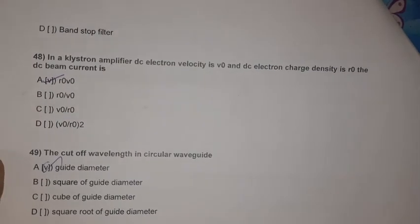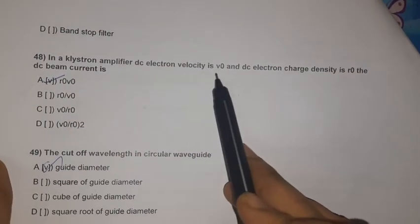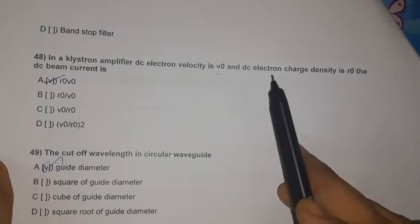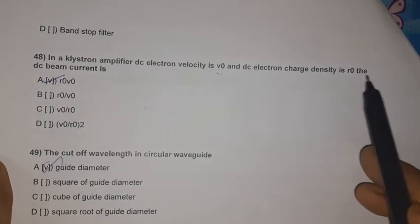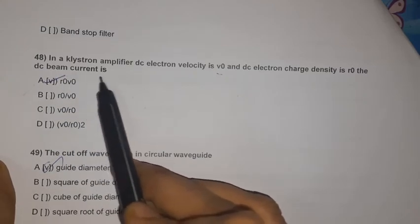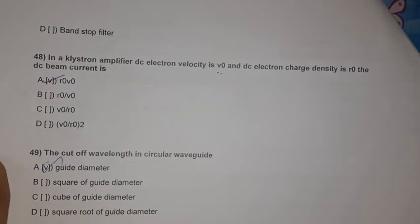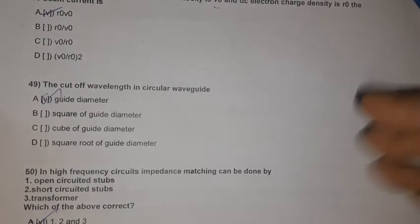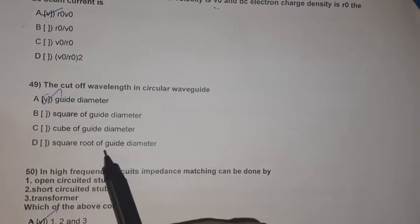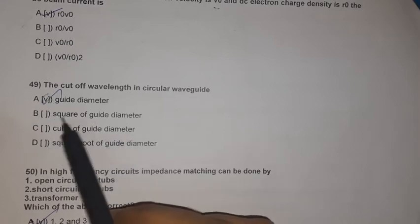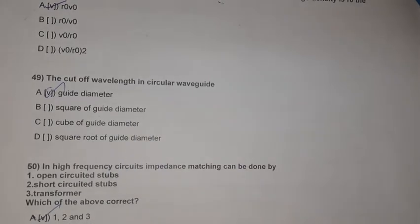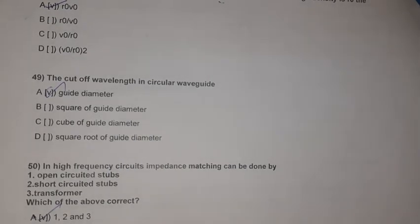Question 48: In a klystron amplifier, the DC beam current = ρ₀ × v₀ (DC charge density × DC electron velocity). Question 49: The cutoff wavelength in a circular waveguide is proportional to the guide diameter.